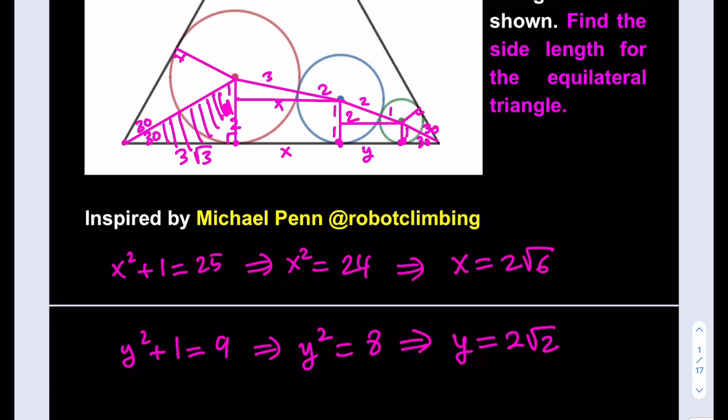Same thing for the smallest circle. We know that the height is 1, so the base is going to be √3 times that. We're almost done. We know x, we know y, we know these little pieces here and there. So what we need to do now is to find the side length for the equilateral.